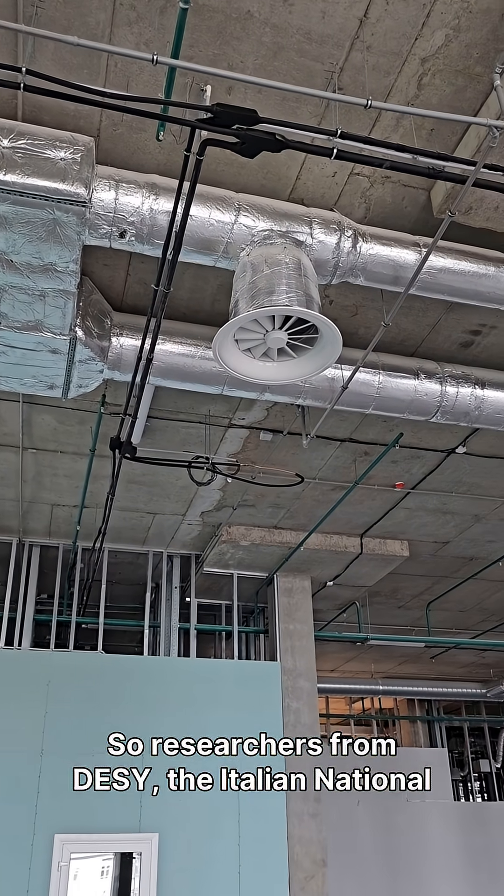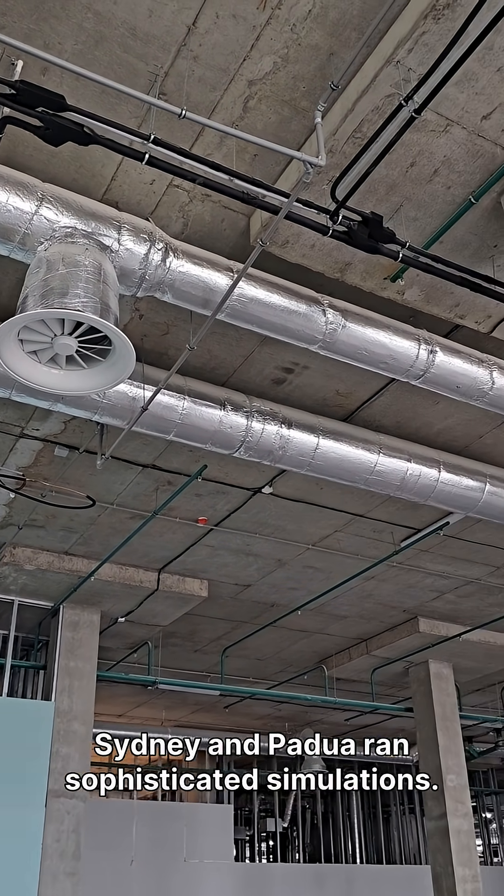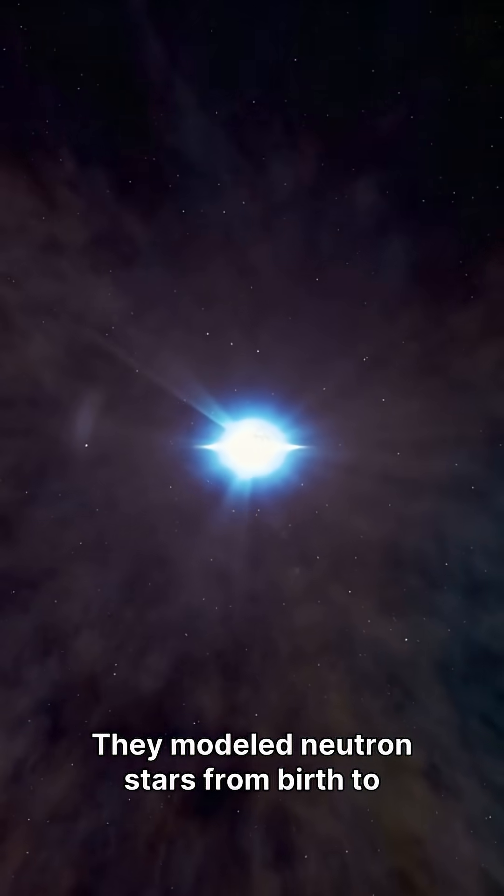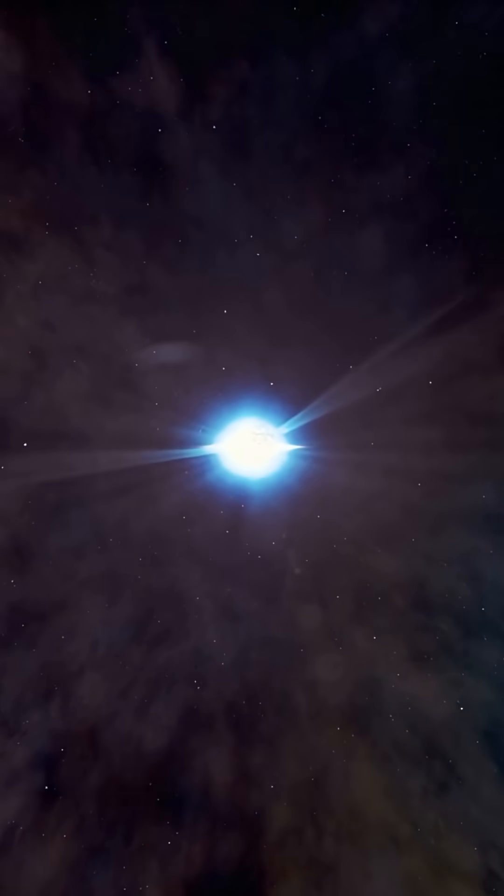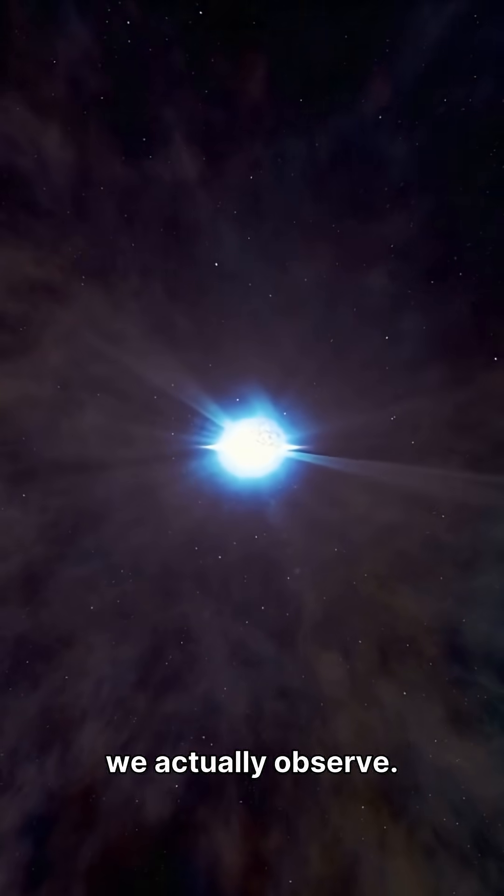So researchers from DC, the Italian National Institute of Nuclear Physics, and universities in Sydney and Padua ran sophisticated simulations. They modeled neutron stars from birth to present day, tracking how they should cool if a fifth force existed. Then they compared those predictions to what we actually observe.